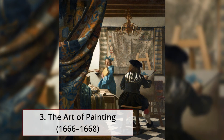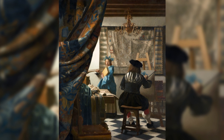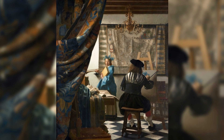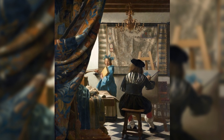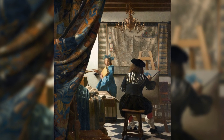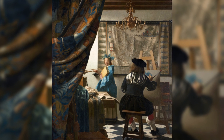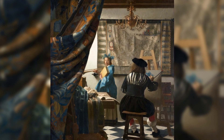3. The Art of Painting, 1666–1668. This canvas depicts an artist painting a woman dressed in blue posing as a model in his studio. The subject is standing by a window and a large map of the Low Countries hangs on the wall behind.